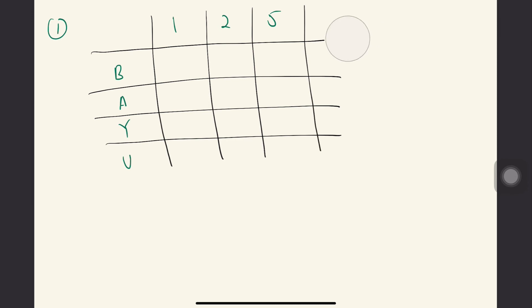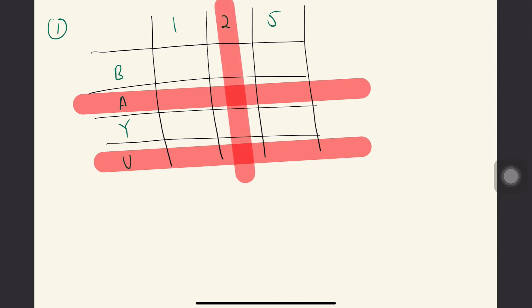Now the question: the probability of getting a vowel and even number. Let's check vowels first. Vowels are A and U. And then even number is 2. So the possible outcomes from this box are A2 and U2. Correct.